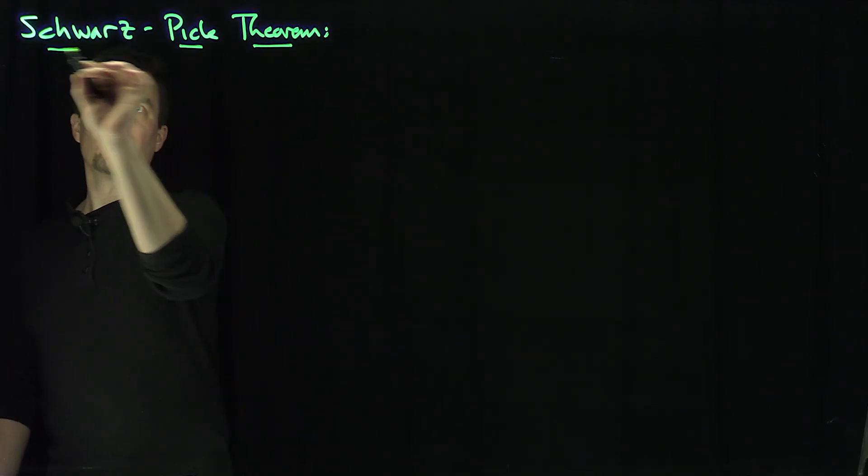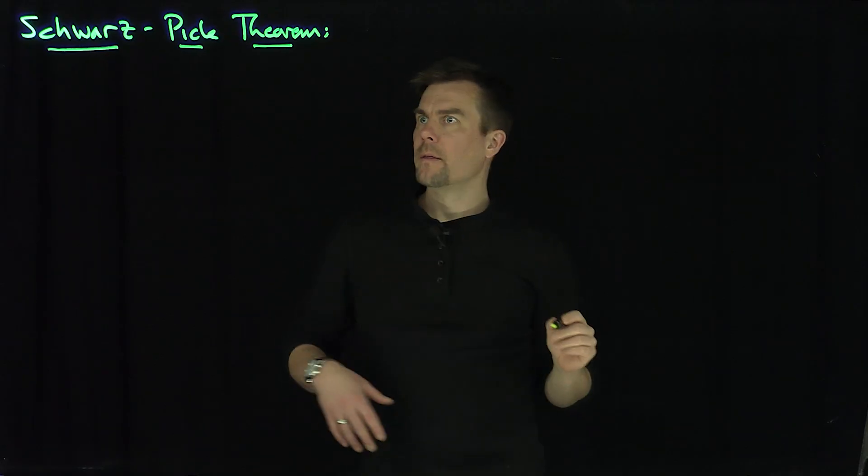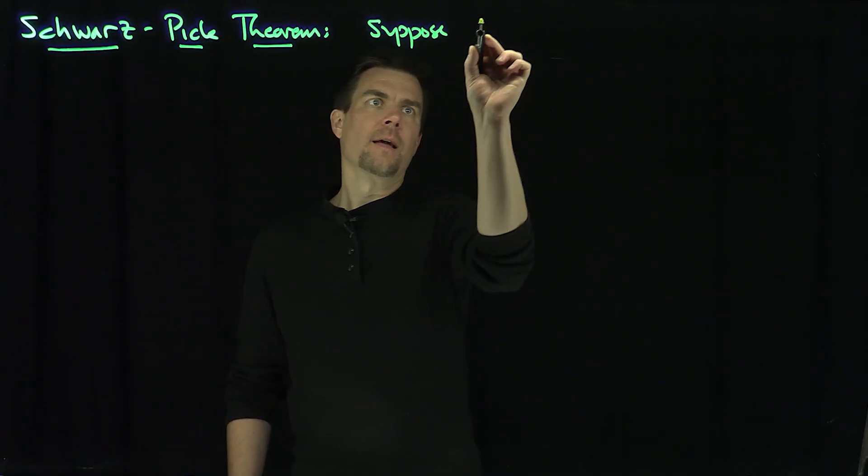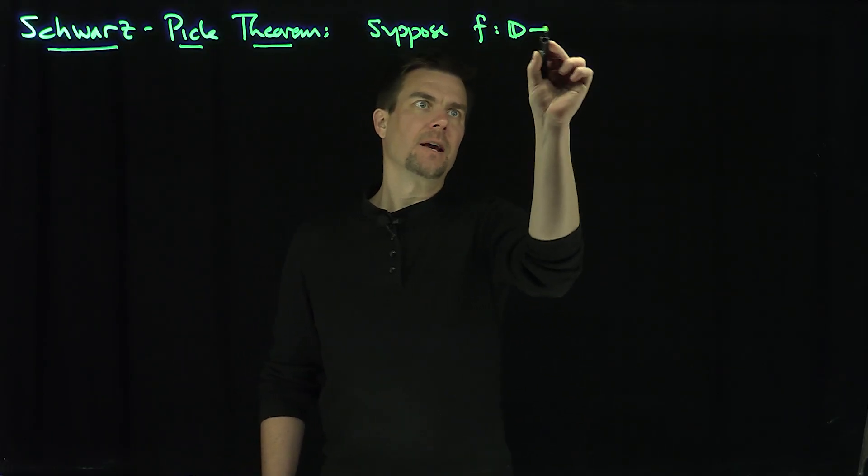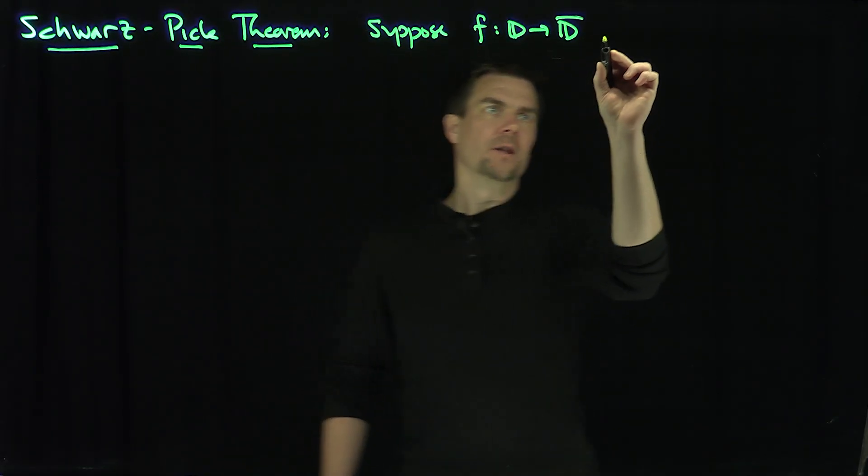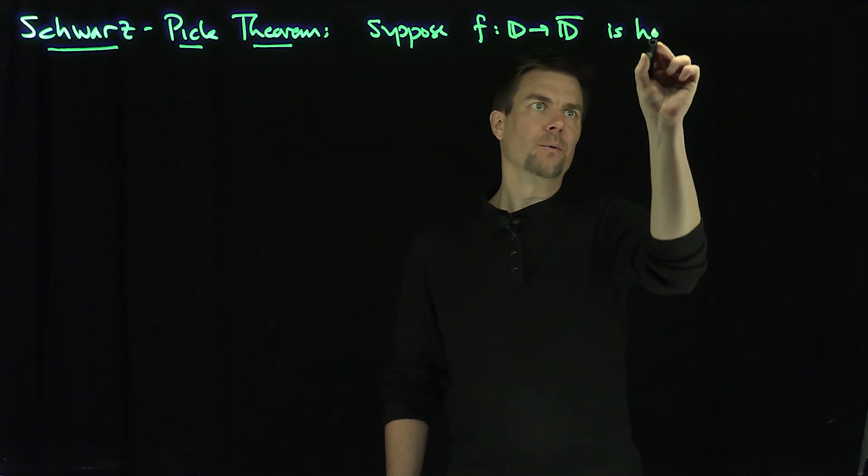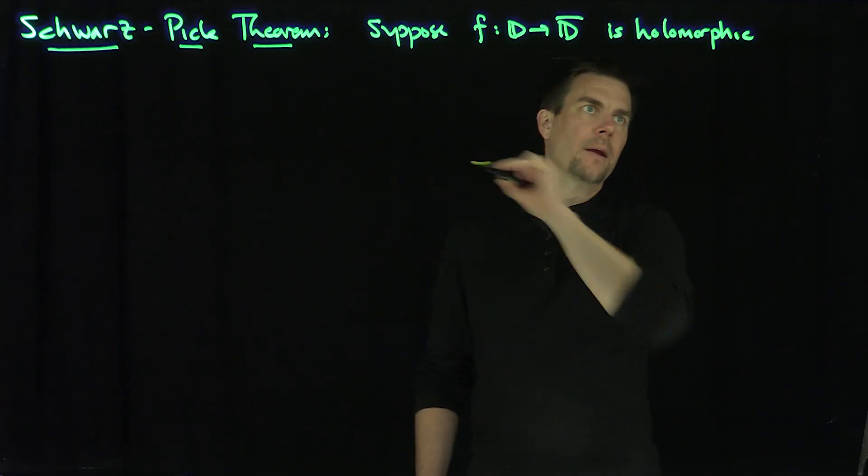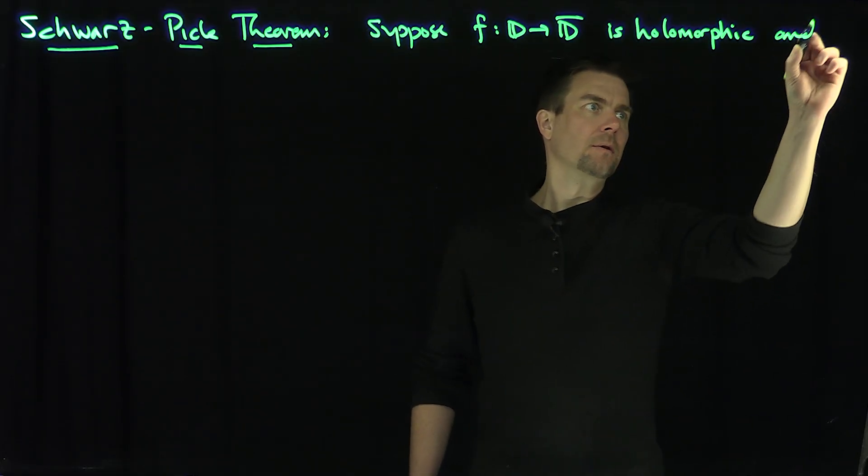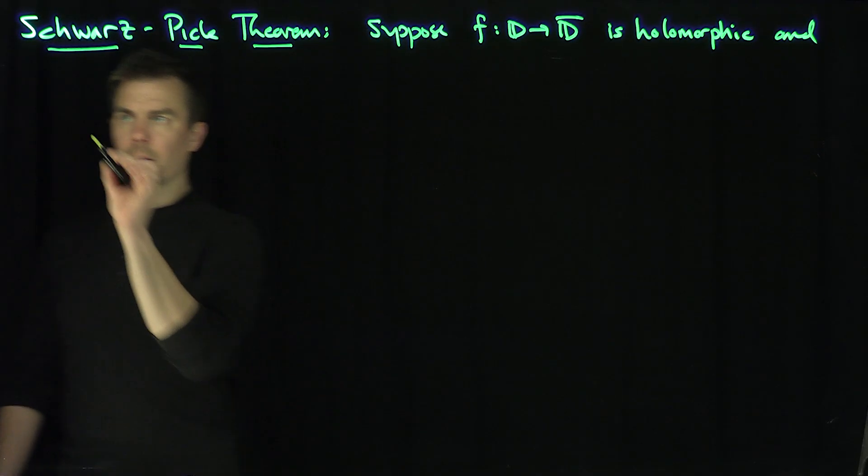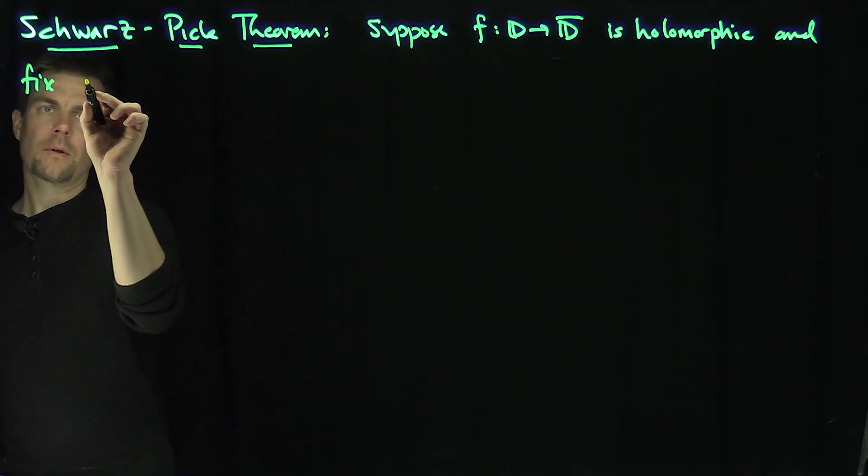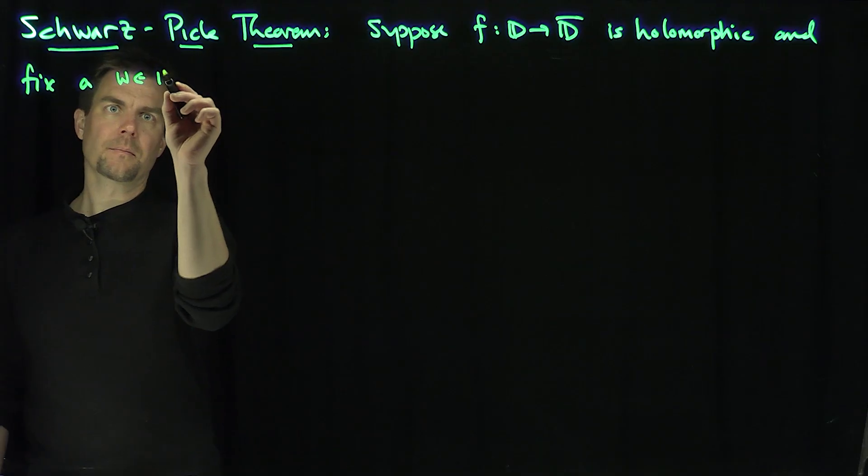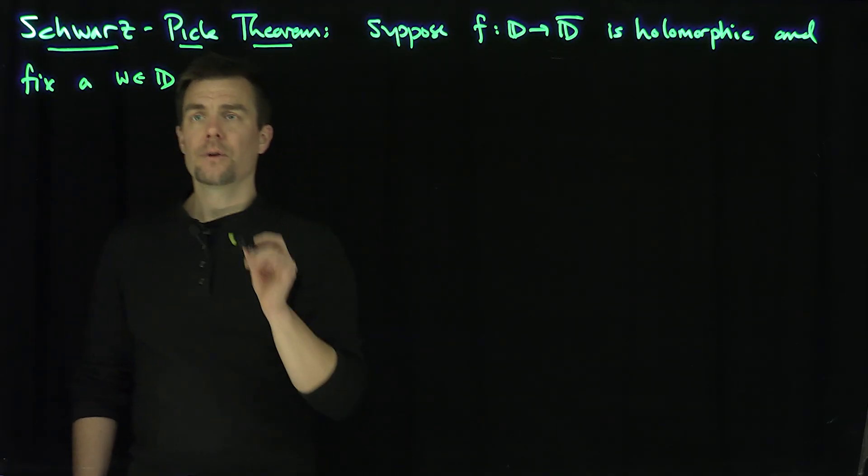It's going to follow from the Schwartz Lemma. Suppose f maps D into the closure of D is holomorphic—in other words, those are just Schur functions—and fix a w in the disk.